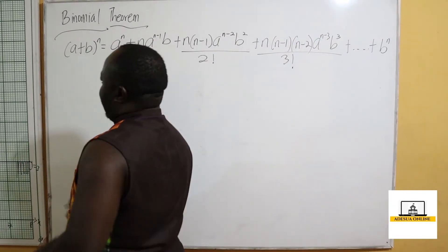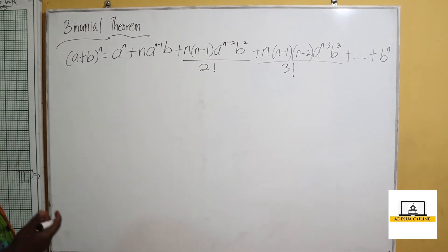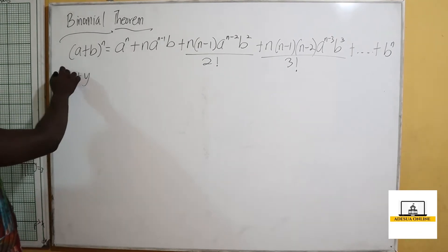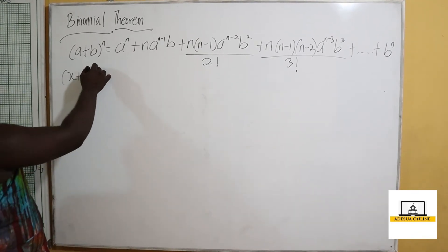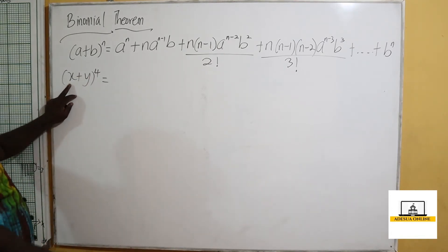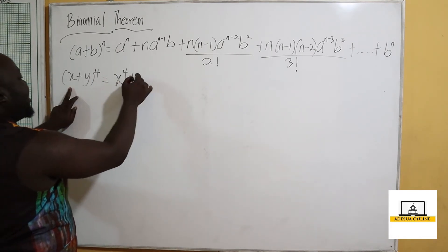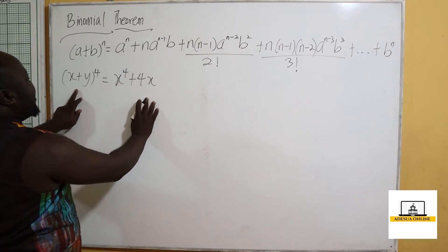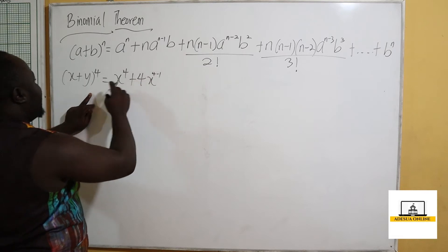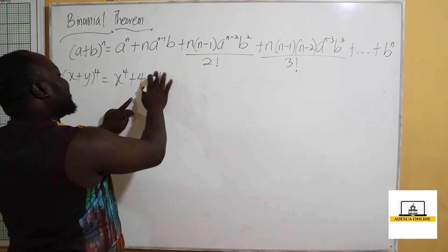Now, suppose I want to find out if what I have done here is valid. Assuming I want to expand x plus y raised to the power 4. So x plus y raised to the power 4 becomes x raised to the power 4, plus 4x — now the 4 multiplies x, we reduce the power by 1 which is 4 minus 1, then we introduce y.